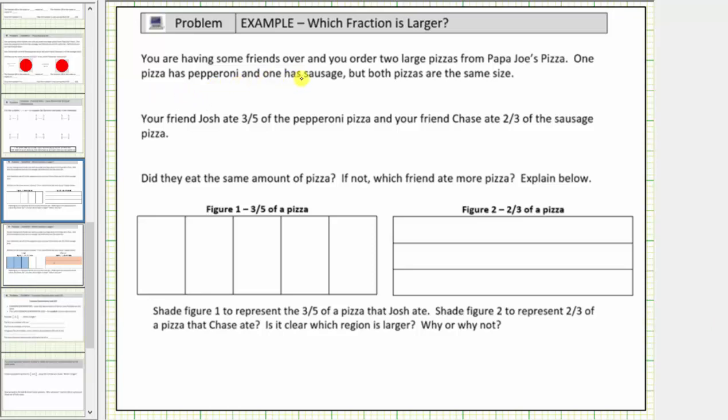You are having some friends over and you order two large pizzas from Papa Joe's Pizza. One pizza has pepperoni and one has sausage, but both pizzas are the same size. Your friend Josh ate three-fifths of the pepperoni pizza and your friend Chase ate two-thirds of the sausage pizza. Do they eat the same amount of pizza?